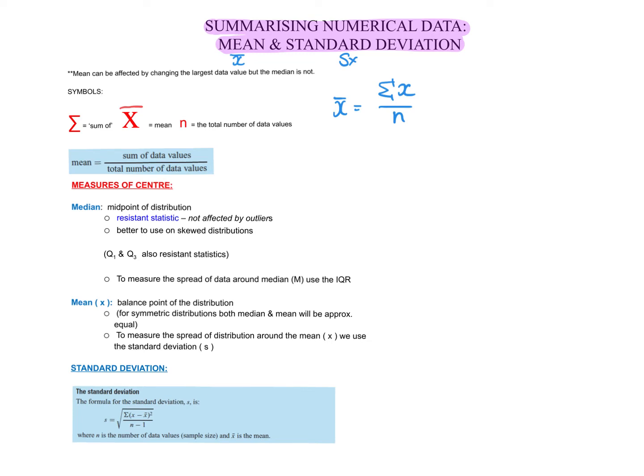So as we said before, there's measures of centre. So we have two types. We can have the median or the mean here. So the median, as we said, is good for when you have skewed data or presence of outliers, because it is a resistance statistic.